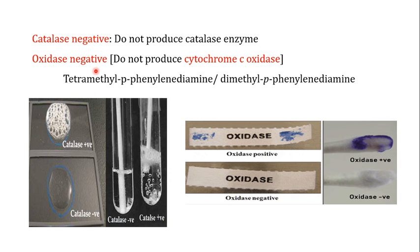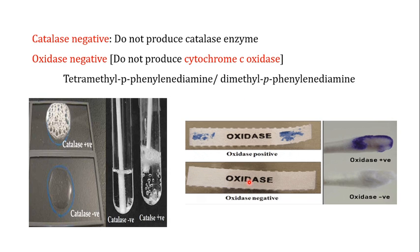Clostridium perfringens is also oxidase-negative, meaning it does not produce the enzyme cytochrome c oxidase. In the oxidase test, test papers are embedded with tetramethyl-p-phenylenediamine or dimethyl-p-phenylenediamine. If an organism is oxidase-positive, cytochrome c oxidase acts on this substrate producing a colored product. Since Clostridium perfringens is oxidase-negative, it cannot act on the substrate and produces no colored product.